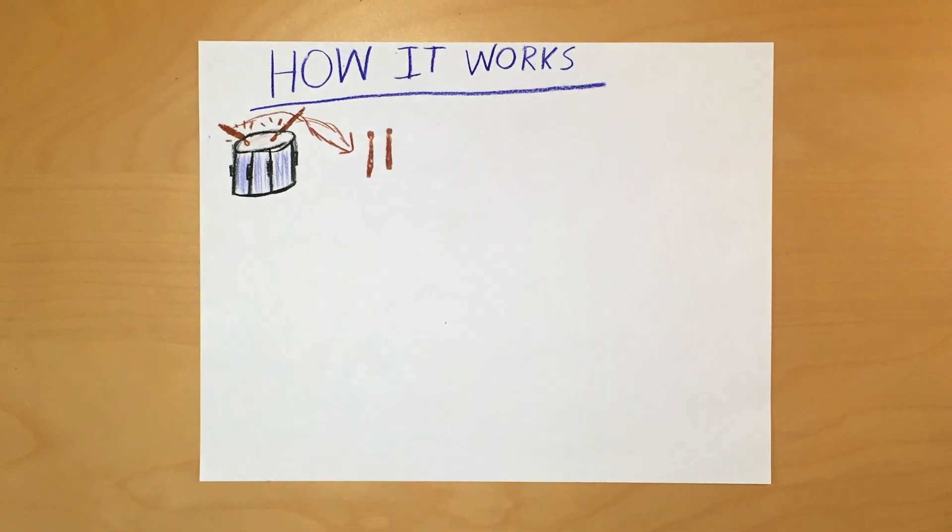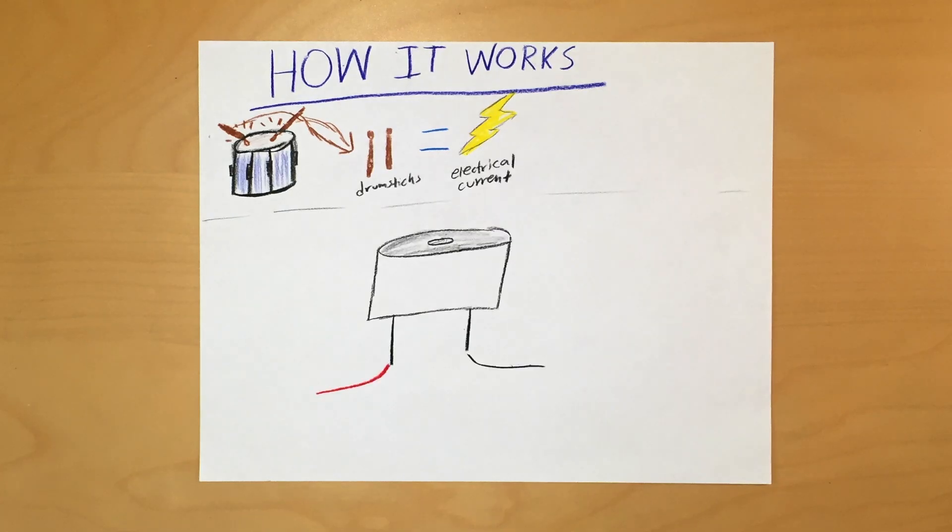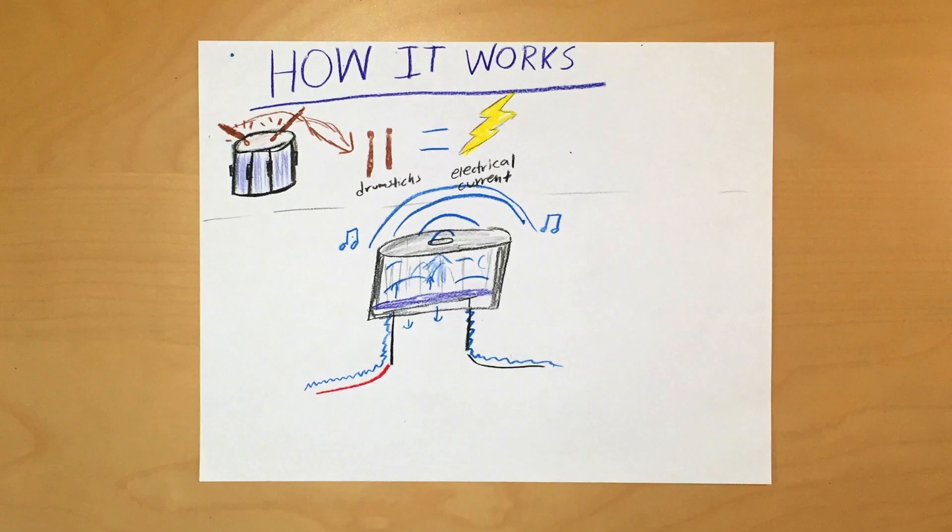However, in a piezo buzzer, the drumsticks are replaced by an electrical current. As the electricity flows through the buzzer, it goes through a ceramic material with piezoelectric properties. This means that when voltages pass through the material, it vibrates, producing a noise. We can change the frequency of the noise by changing the frequency of the electricity.